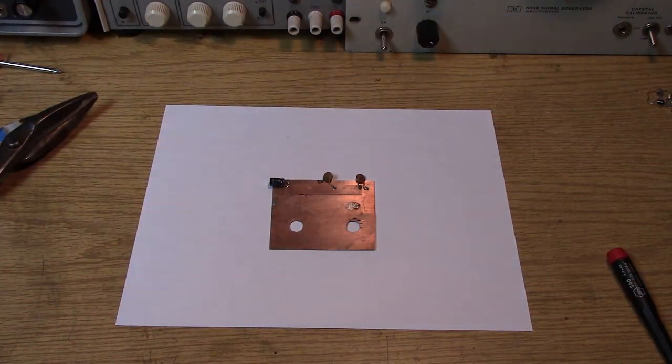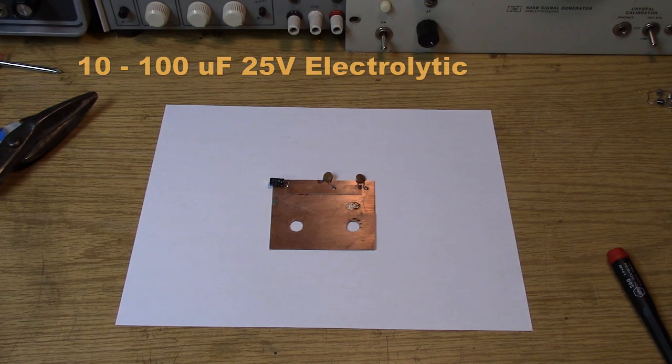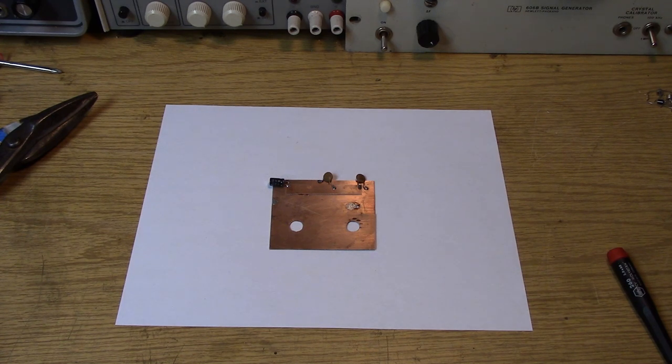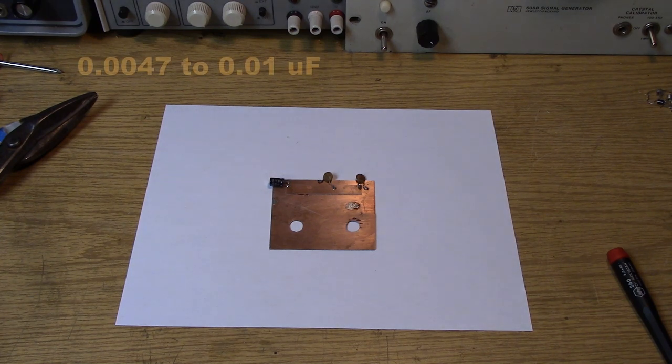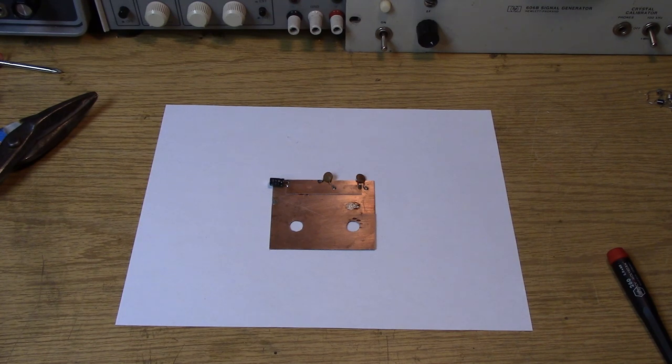I've actually soldered three capacitors onto our bus. To the very left is a 100 microfarad electrolytic. That's where we're going to attach our power source, our 9-volt battery. The second capacitor is a 0.005 microfarad. The third capacitor to the far right is a 0.1 microfarad capacitor.